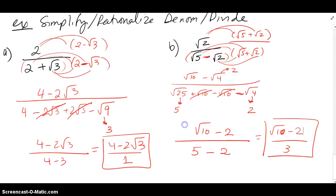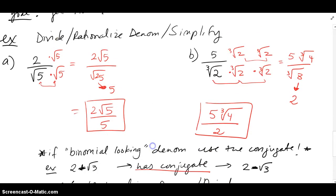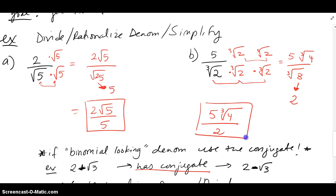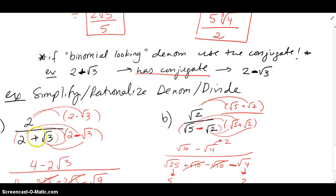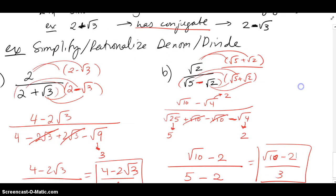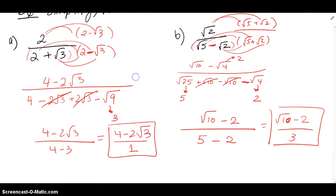Quick review: if you have only one term in the denominator, multiply by whatever is needed to get a perfect square or perfect cube, so the radical disappears. If you have two terms in the denominator, use the conjugate, so the middle terms cancel and the radical is gone from the denominator.